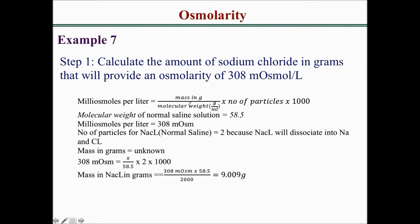Keying in all values: 308 = X divided by 58.5, times 2, times 1000. Making mass the subject of the formula gives: X = 308 × 58.5 divided by 2000, which equals 9.009 grams of sodium chloride. This means 9.009 grams of sodium chloride will provide an osmolarity of 308 milliosmol per liter.